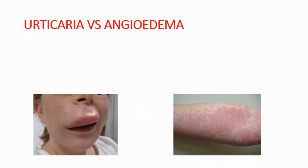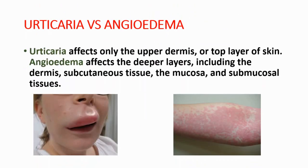Let's compare urticaria and angioedema. Urticaria affects only the upper dermis, which is the top layer of skin. Angioedema affects the deeper layers, including the dermis, subcutaneous tissue, the mucosa, and submucosal tissues. On the left image you are seeing angioedema, which is affecting the deeper layers. On the right side you are seeing urticaria, which is affecting only the top layer of skin.